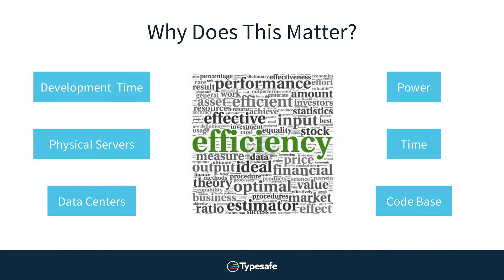Why does this matter? It matters for efficiency. There are so many parts of building and deploying an application that need to be more efficient to be reactive — the time it takes to develop an application, the physical servers you're going to run on, the number of data centers you're using. By writing less code you're being reactive because you don't have to maintain quite as much. Plus the time to write less code is clearly less, you're being more efficient, and you're saving power. This energy savings is a direct cost savings for your organization.